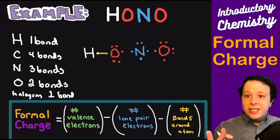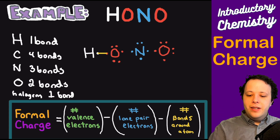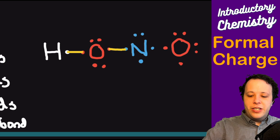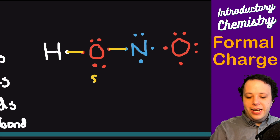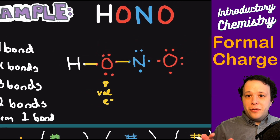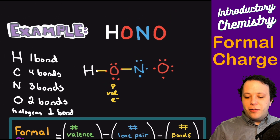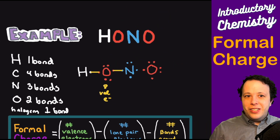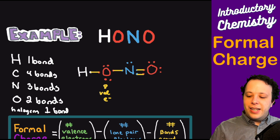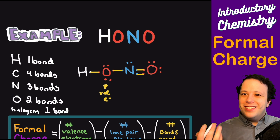Now we connect all our pieces and then verify using formal charge. We connect hydrogen to oxygen — that's easy since hydrogen always makes one bond. Oxygen needs to make one more bond to be happy, so we bond it to the nitrogen next door. This gives oxygen eight electrons. Since oxygen makes two bonds and nitrogen makes three, we rearrange to make a double bond between nitrogen and the second oxygen. But is this right? This is where formal charge can help us.